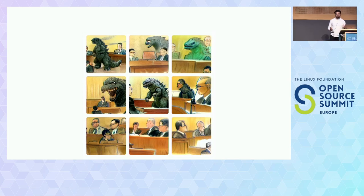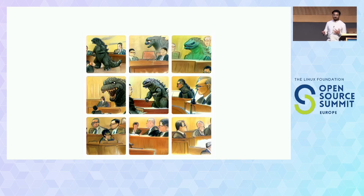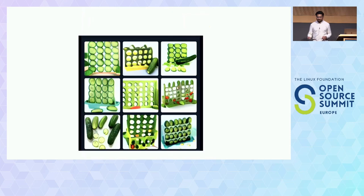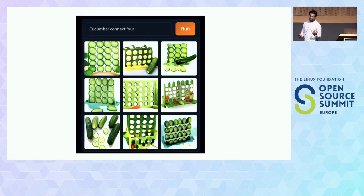Can anybody guess what's happening here? There's Godzilla in there. There's a court. Godzilla on trial — basically a court sketch of Godzilla on trial. Anybody play Connect 4? With AI, you can play Connect 4 with cucumbers, as you can see here.